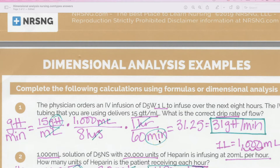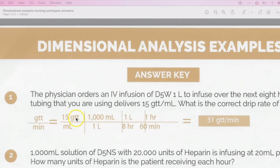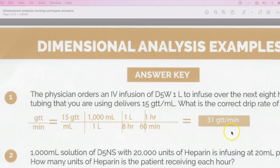That's a good way to check that you set up the dimensional analysis equation correctly. So 15 times 1000, divided by 8 times 60, gives you 31.25. You round because you can't give half a drop — if it's four or less, round down; five or above, round up. So the answer is 31 drops per minute. This is how nursing.com did it: they did 15 drops per milliliter, then 1000 milliliters over one liter, one liter over eight hours, and one hour over 60 minutes — same answer, 31 drops per minute.